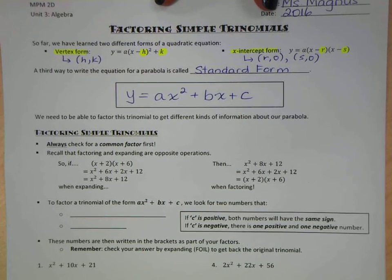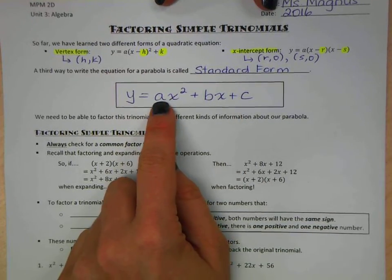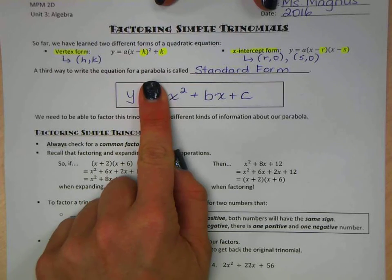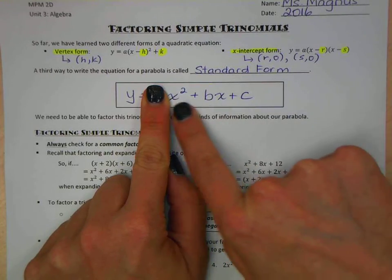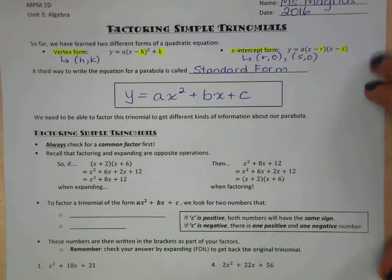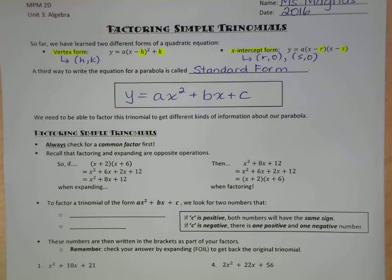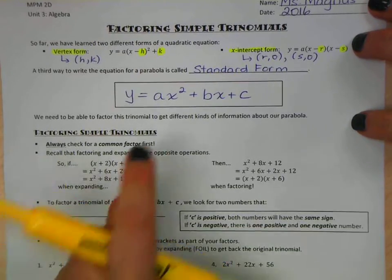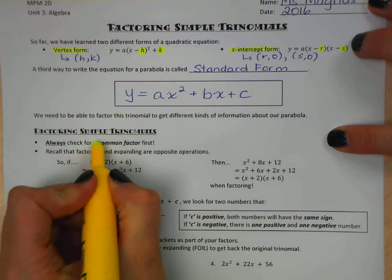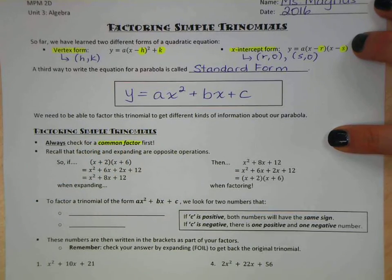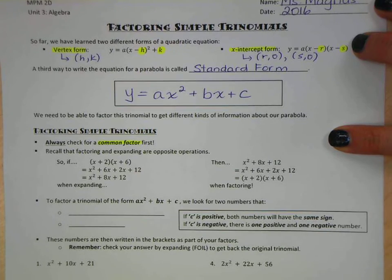A simple trinomial is considered something where our a value is one. So really you wouldn't see a number there, you're just going to have that invisible one. And then we're factoring this right here. So the first thing you want to do when you're factoring simple trinomials is just check that a is one or see if you can common factor something out. Always check that you can do that first. If you can, do it, and then do this next process.